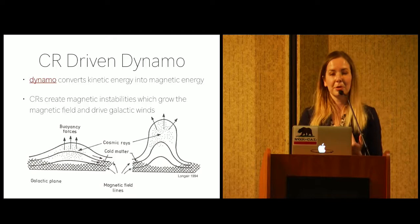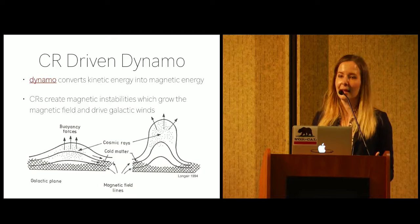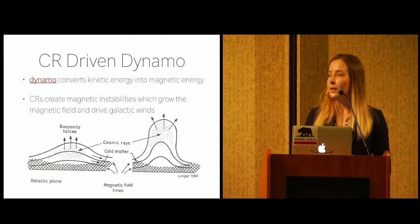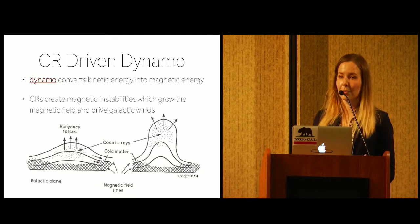So what cosmic rays do as they stream along these magnetic field lines is they drive instabilities in the magnetic fields, and that creates a cosmic ray-driven dynamo, which is just a generic term saying that kinetic energy is getting converted into magnetic energy. And these instabilities also create outflows, which have been shown to be much stronger and more mass-loaded than outflows from thermal feedback alone.